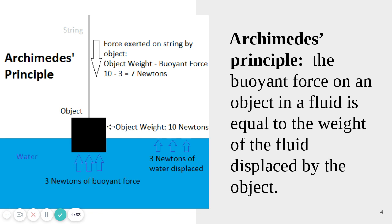Remember, no two things can be in the same spot at the same time. For example, if I have a bucket of water and I put my hand into it, the water and the hand cannot occupy the same space at the same time, so the height of the water will rise up a little bit because of the volume of my hand. The same thing happens with Archimedes' principle: when I put the black box into the water, the water and the wood cannot occupy the same spot, so some of that water gets pushed to the side. The weight of the water being pushed to the side creates a buoyant force.